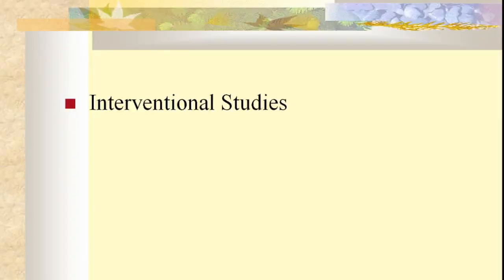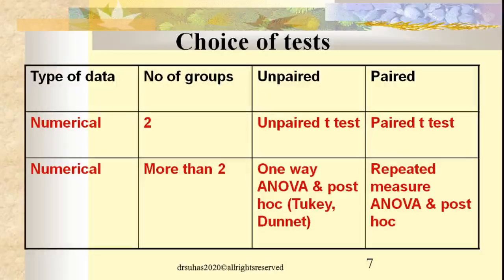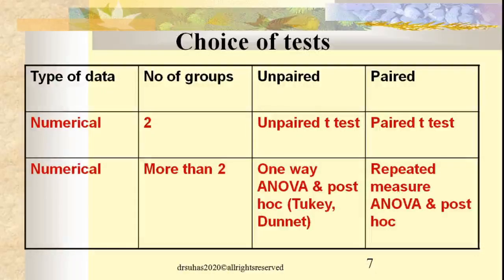For interventional studies, here is a useful table to understand and select the appropriate statistical test. If the type of data is numerical — interval or ratio data like blood pressure, fasting blood sugar, weight, or age — and there are two groups, then you have two choices: the unpaired test and the paired test. Unpaired is for testing differences between the groups, while paired is for testing within the groups. Suppose there are two groups and you want to see the difference between them with numerical data — you select the unpaired test. If you want to test within the groups, you select the paired test.